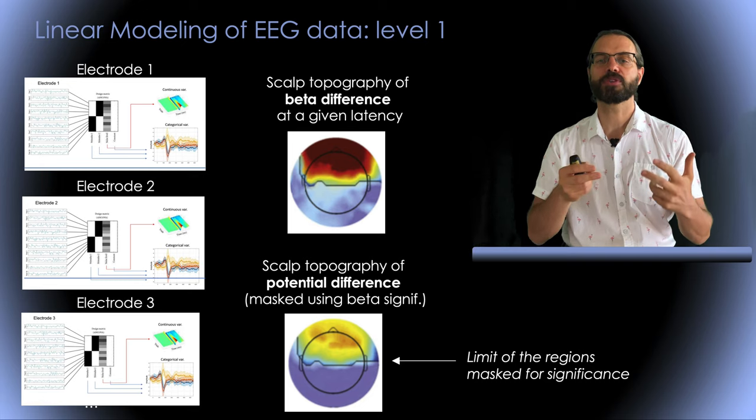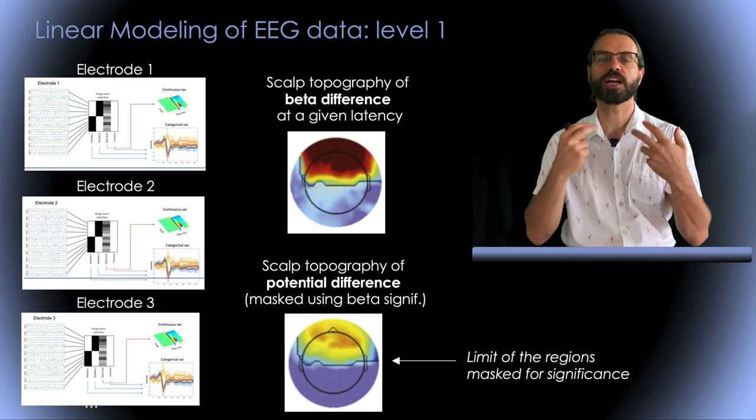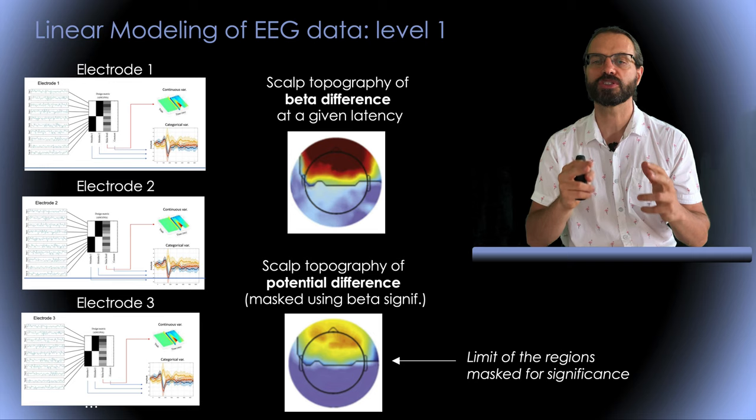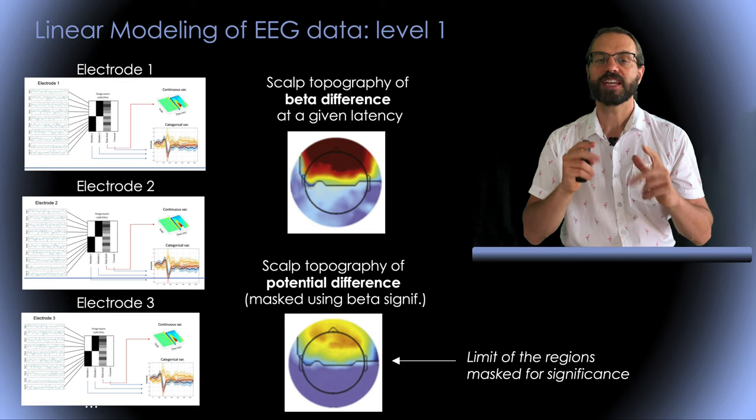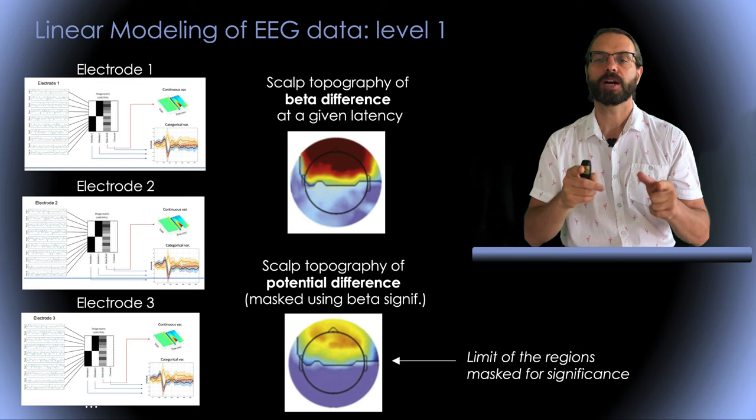When you only have two types of stimuli, instead of scalp topography of beta, we can also plot scalp topography of EEG potential difference between stimulus type. Then we can use the same mask for significance as we were using for the beta parameters.